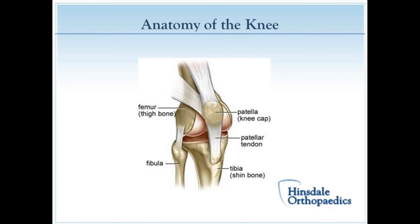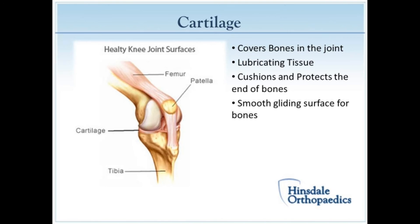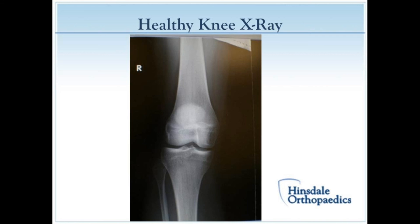The knee anatomy includes the femur — the thigh bone — the patella or kneecap, the fibula on the side of the leg, and the tibia or shin bone. There is cartilage that covers the end of the bone. What you see on this picture that's white is the joint surface cartilage — it provides a cushion that protects the ends of the bone and a smooth gliding surface. That's what wears away over time.